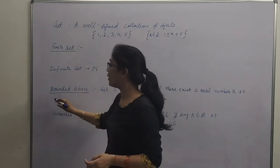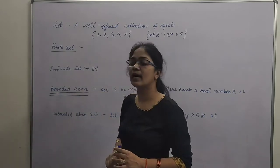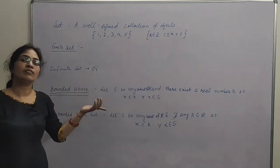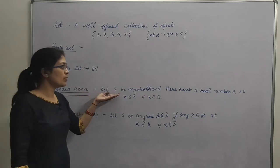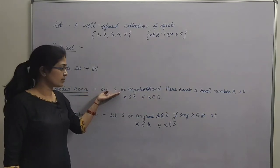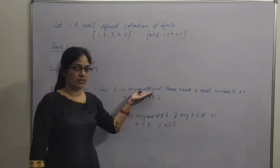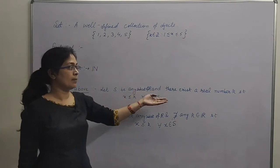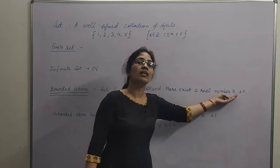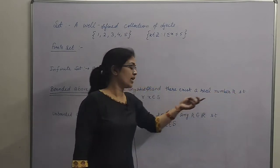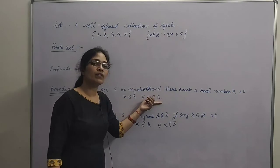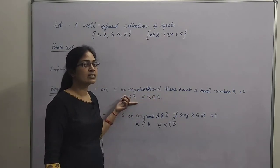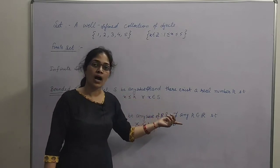Now next is bounded above. What do you mean by a set which is bounded above? Kisi bhi set ko hum bounded above kab kehenge? Suppose koi bhi ek subset S hai, subset of real numbers. Agar hum ek aisa real number k find out kar sakein, such that every element of S is less than this k, then this set S is said to be bounded above.